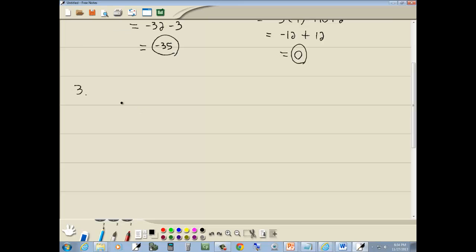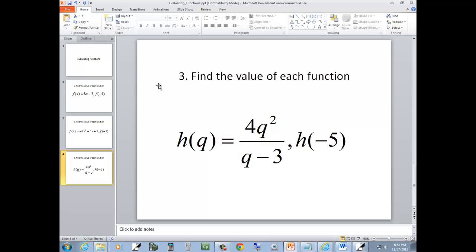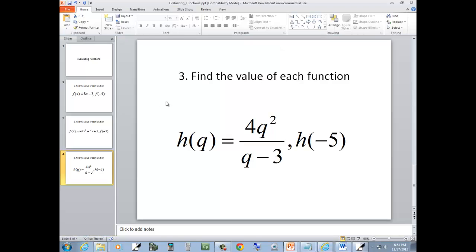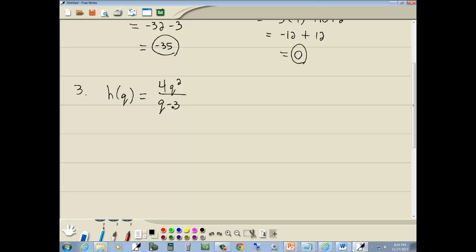Let's look at one more. We've got h of q is equal to 4q squared over q minus 3. And we want to find h of negative 5.